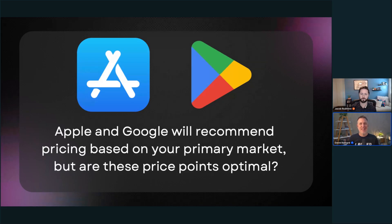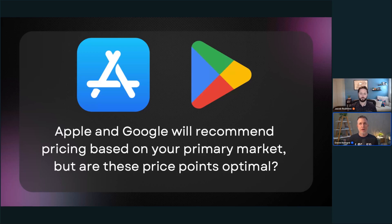Apple and Google do automatically adjust pricing across the entire globe, so individual countries do get automatic price adjustments on both platforms. But the point is that they're not optimal. When you read what Apple and Google are suggesting, those price points aren't matching local conversion rates or purchasing power — they're suggesting price points so you get the same amount of revenue based on that initial price point.